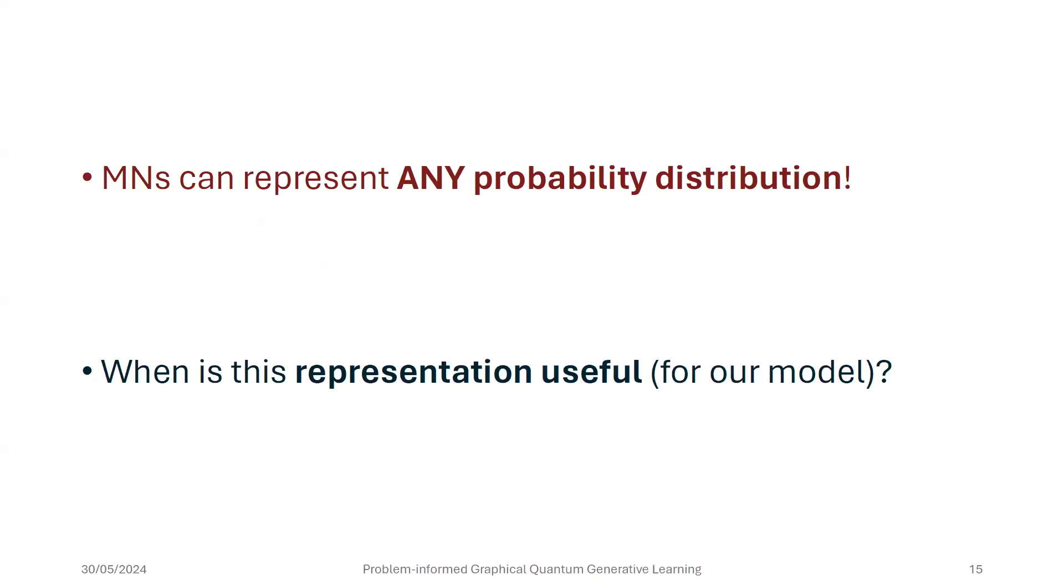Now, this framework is very general. Markov networks in general can represent any probability distribution. So, when are these actually useful to construct a quantum learning model? And I will try to answer this in four points, or sort of do some explorations into different directions.